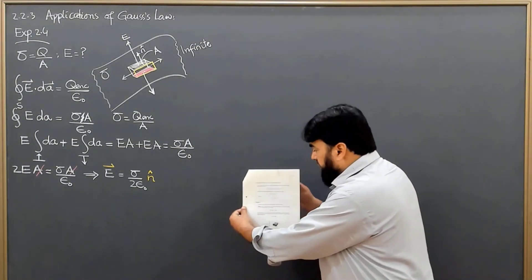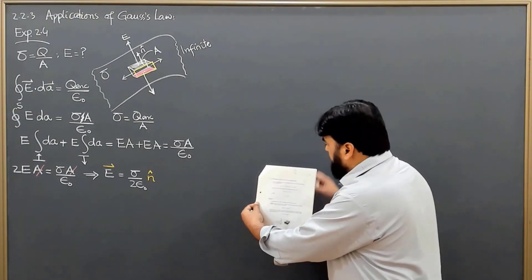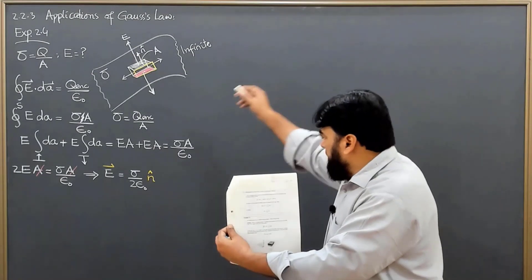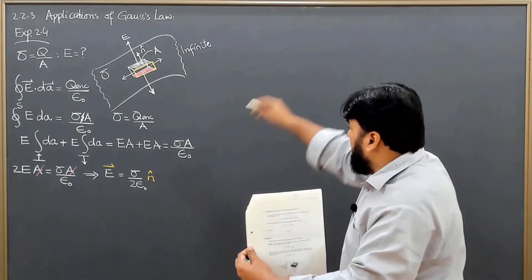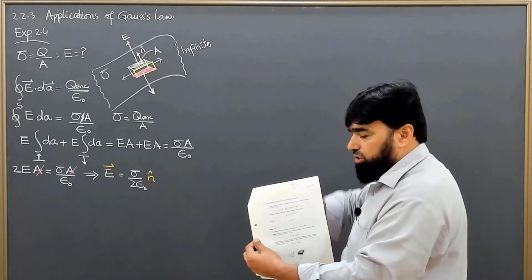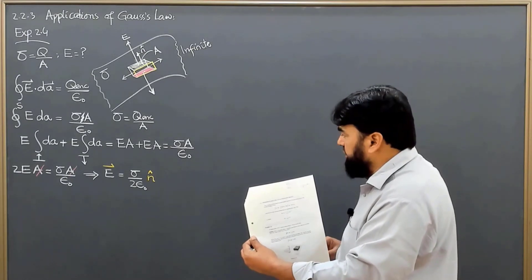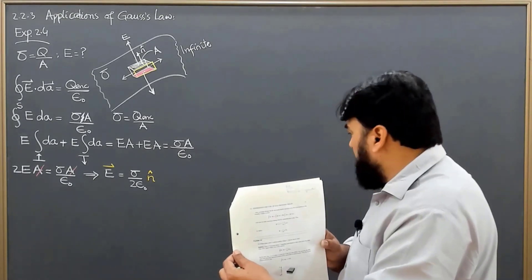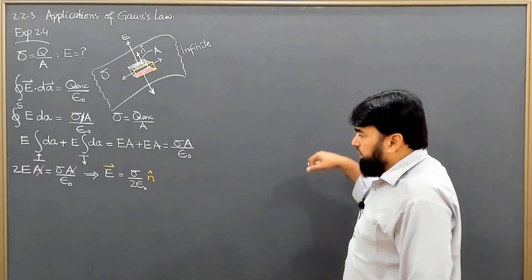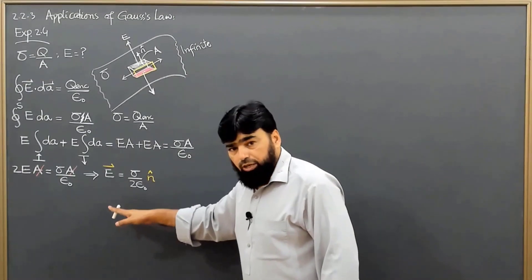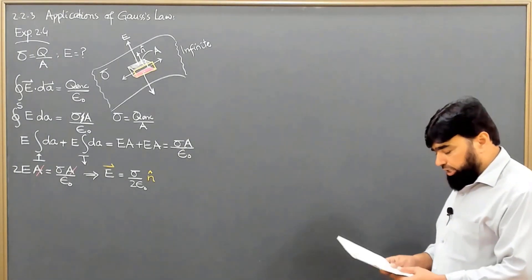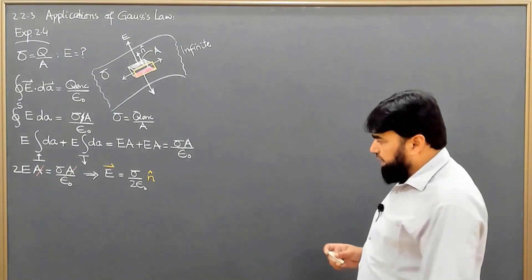If the observation point is here, then these are the charges which are in interaction. As I move away, the distance is increasing and the area is increasing — the number of charges coming into this field of view or interaction is increasing. As I go farther away, more and more charges come into action, which keeps the electric field the same and not decreasing at all. So that's the reason we have a constant electric field.